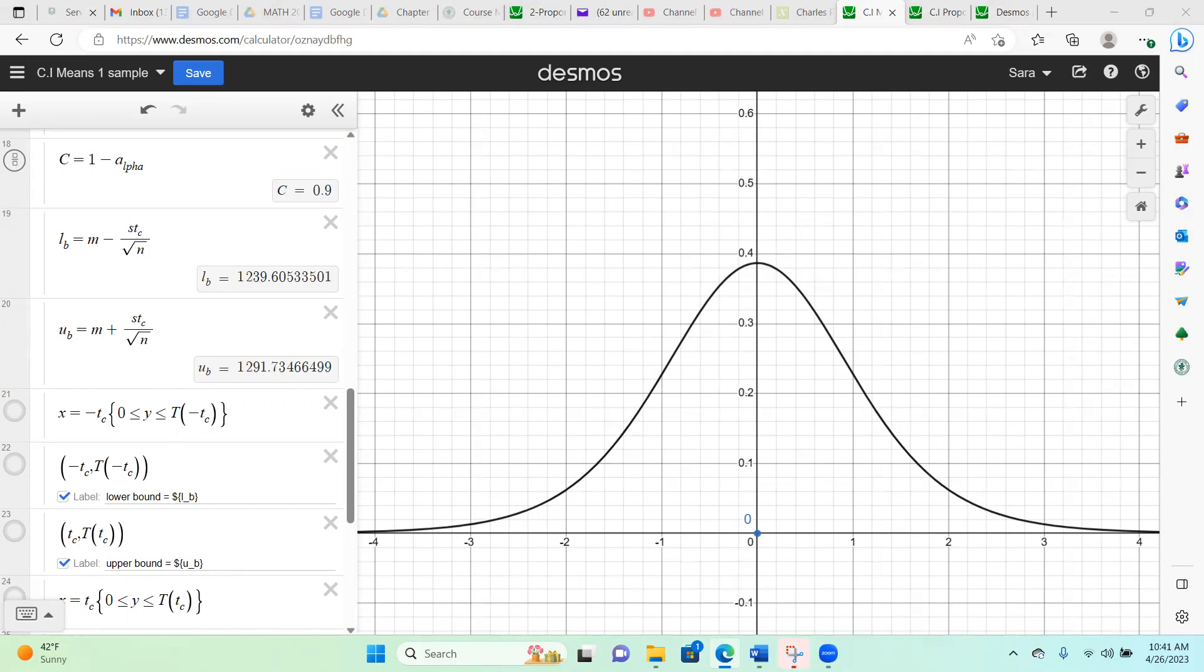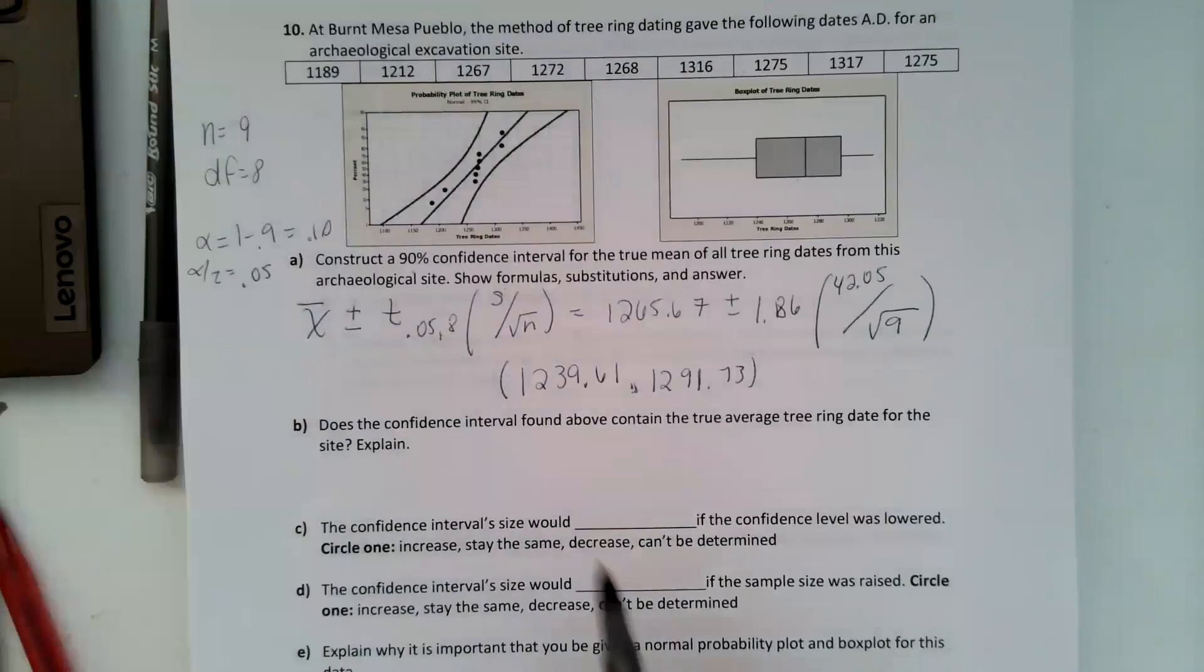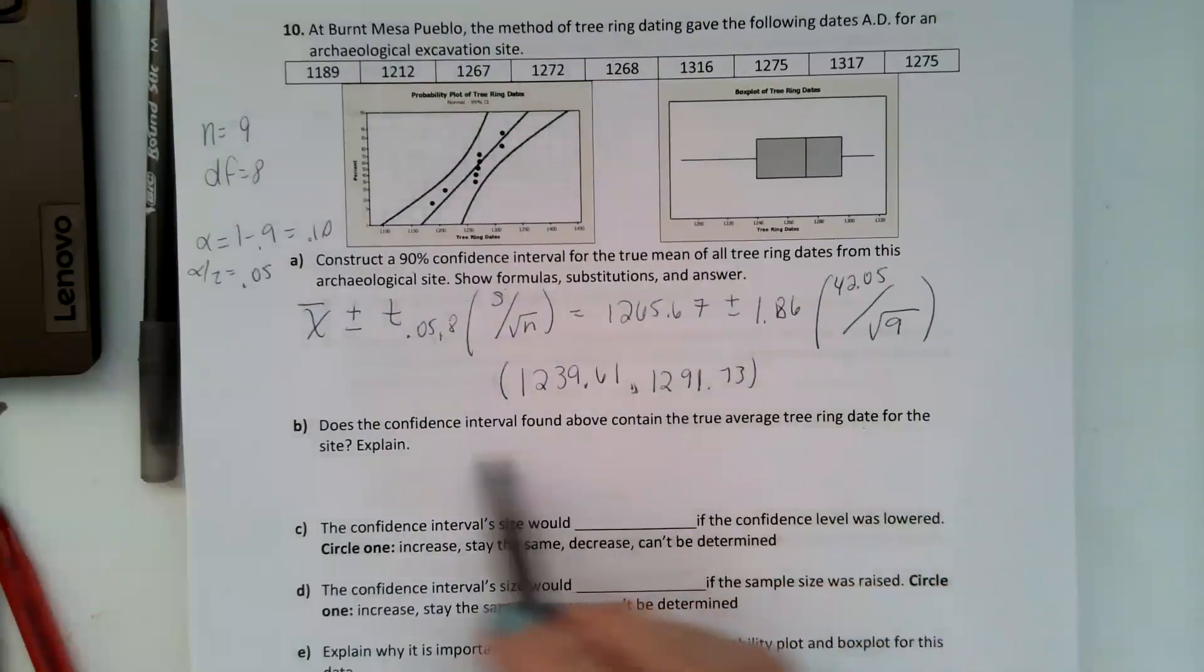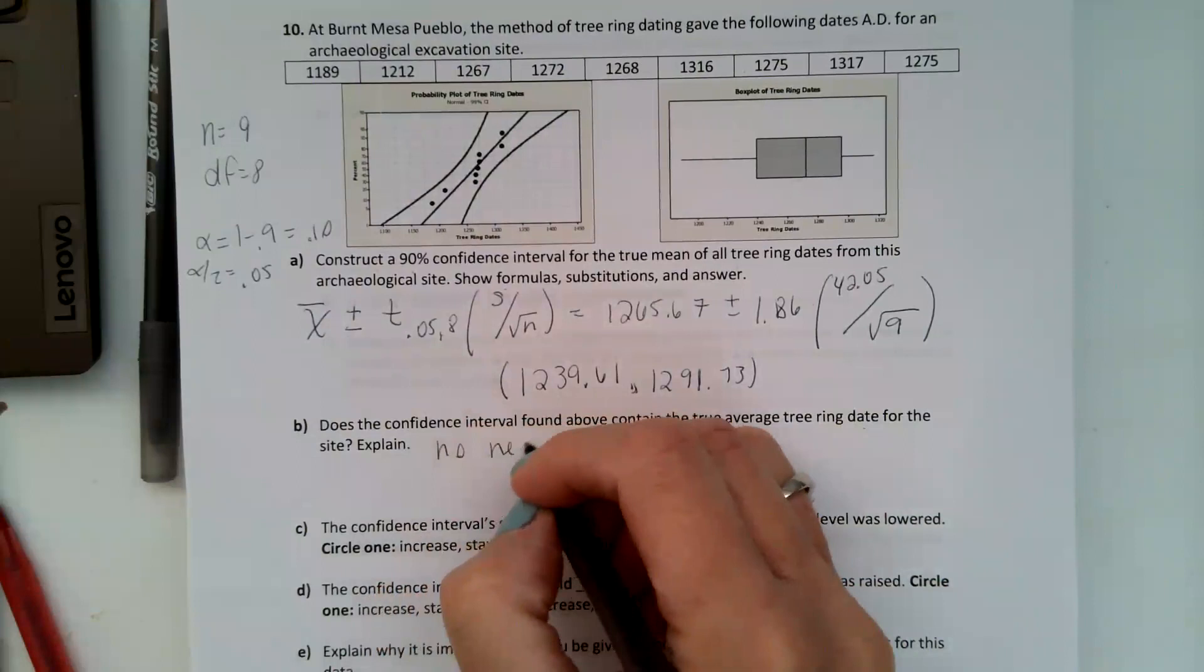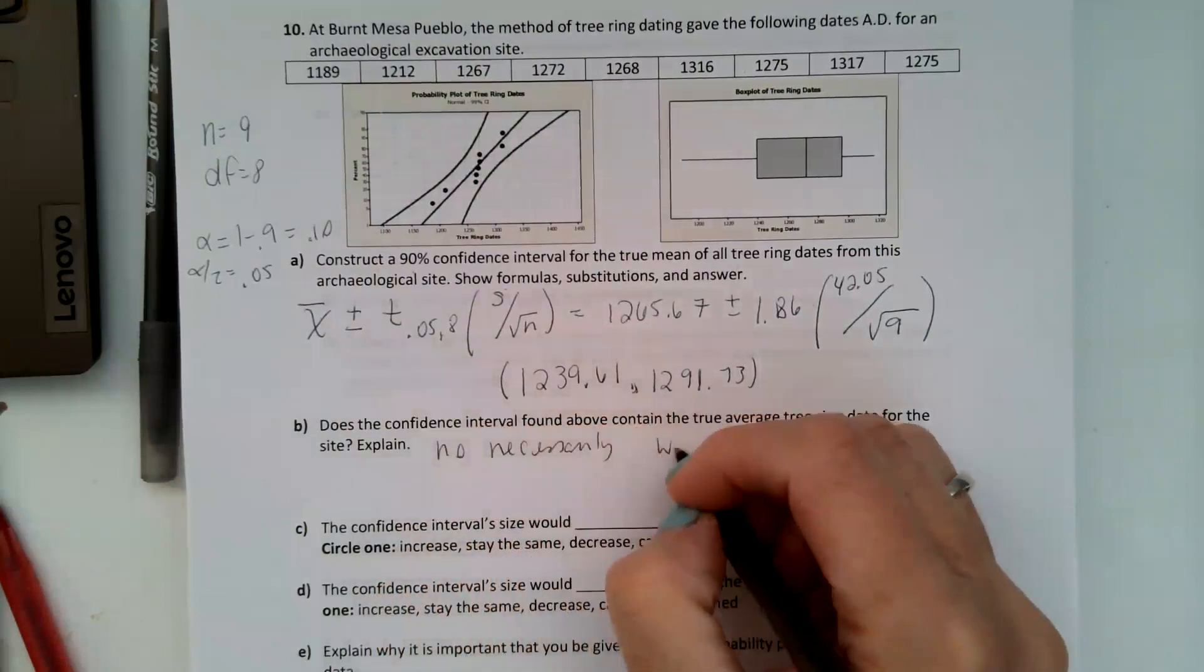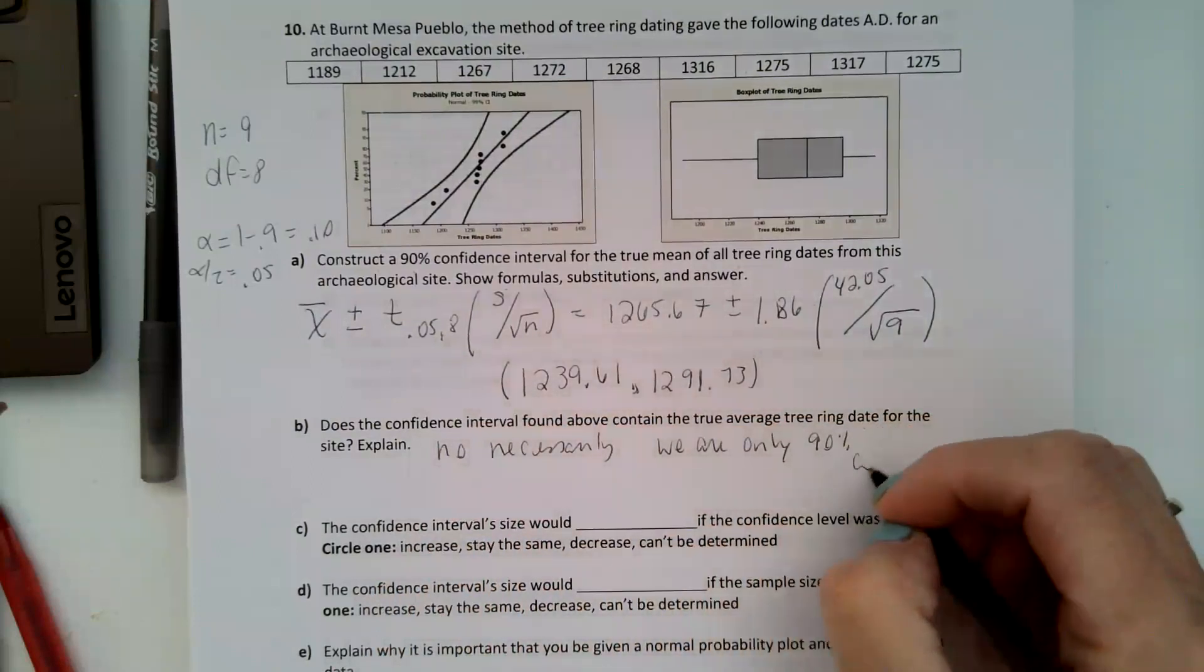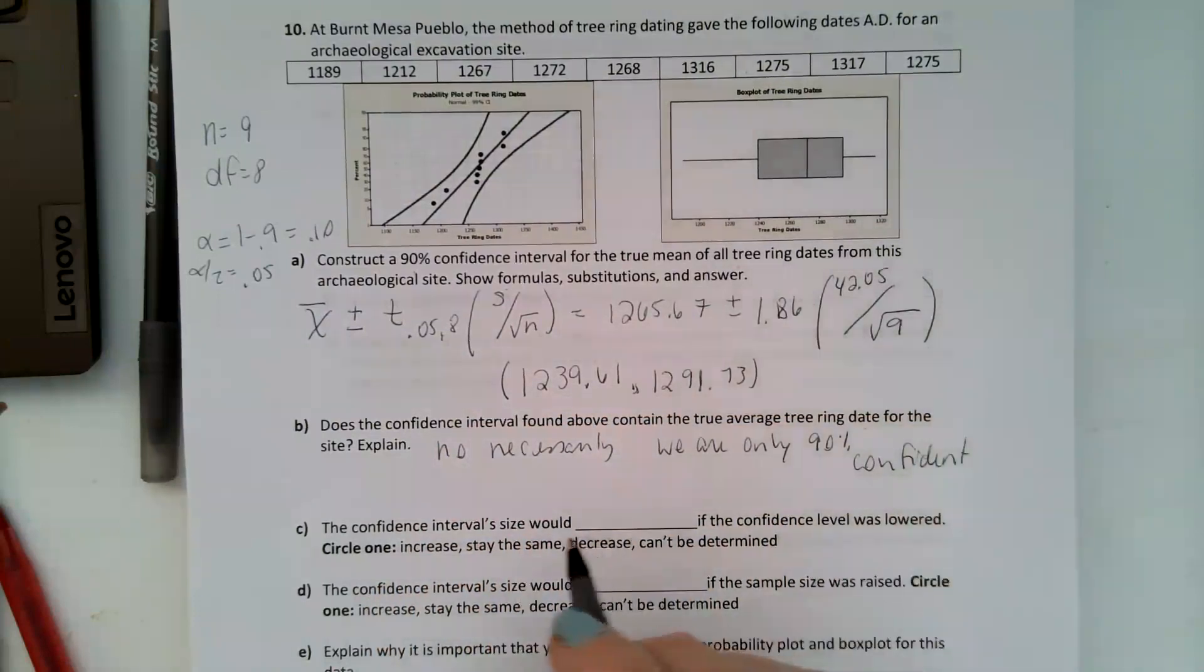I'll share with you what I have written on my paper. It says does the confidence interval found above contain the true average ring date for the site? Not necessarily. We're only 90% confident that it's going to contain that. We are 90% confident that it does, but we hope so.